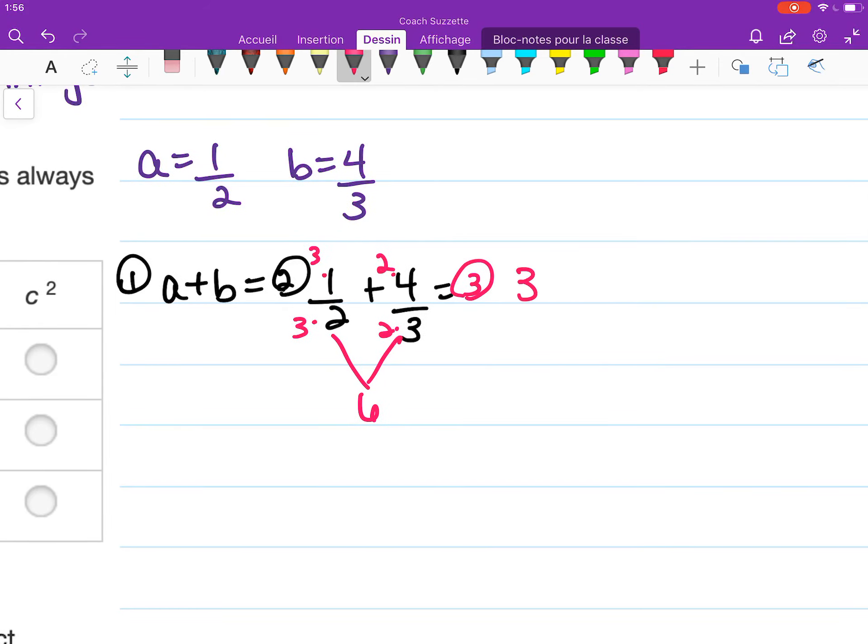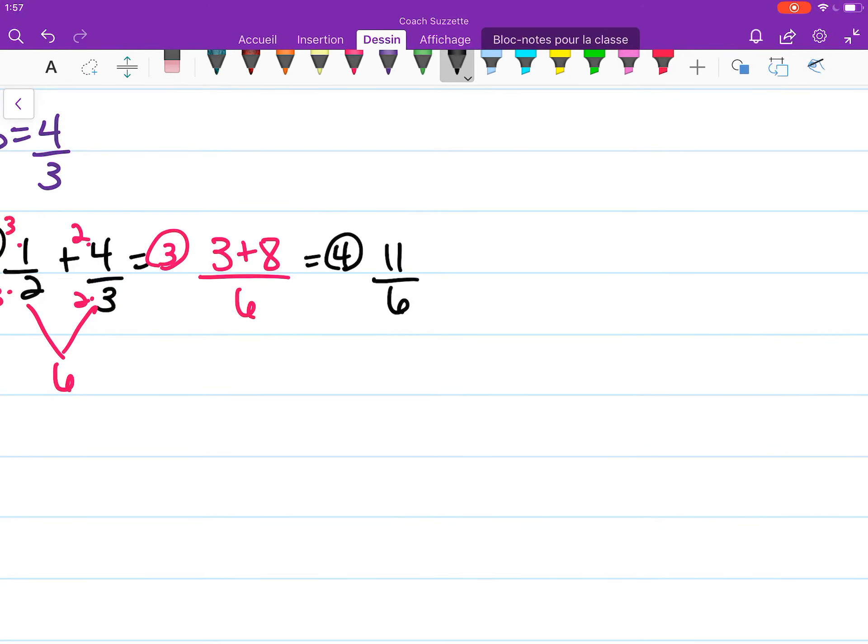So that would give us 3 plus 8 over 6 is equal to 11 over 6. Is 11 over 6 a rational number? Yes, it is, because it's a fraction and this is an integer and this is an integer.